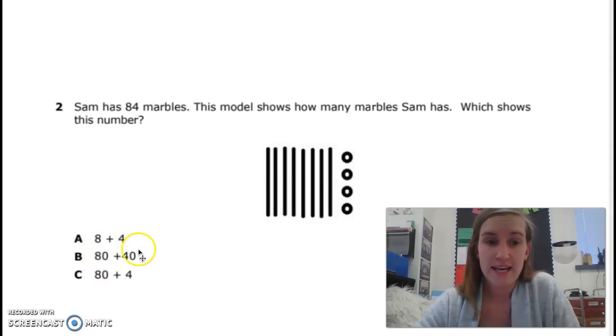Let's look at B. 80 plus 40. Well, 80 is the value of our tens, but 40 is not the value of our ones. Our value is 4.